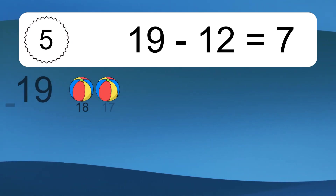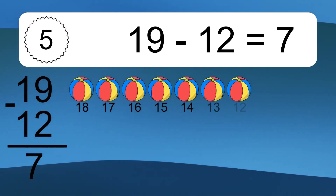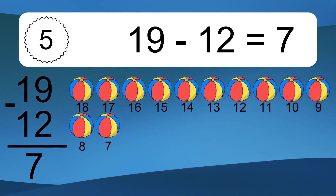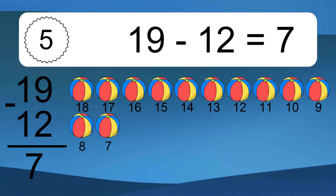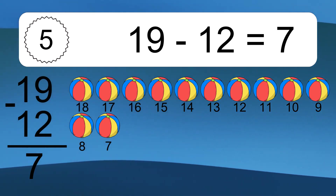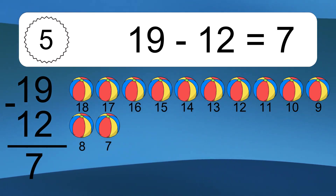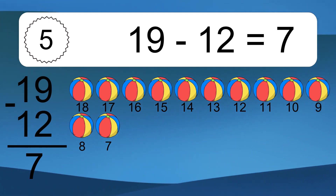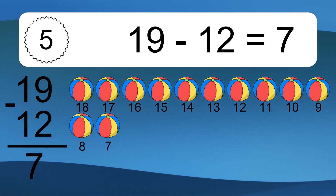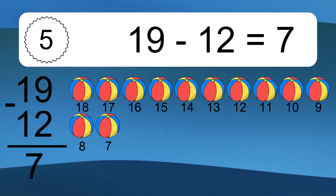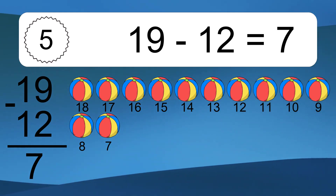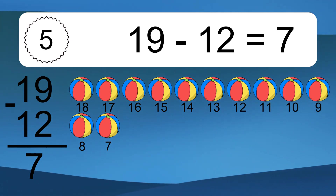19 minus 12 equals what? 19 minus 12 equals 7. Let's count it: 18, 17, 16, 15, 14, 13, 12, 11, 10, 9, 8, 7.